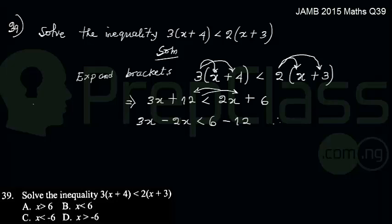I will therefore have 3x minus 2x, which will give me x, less than 6 minus 12. 6 minus 12, so I will have a negative answer.